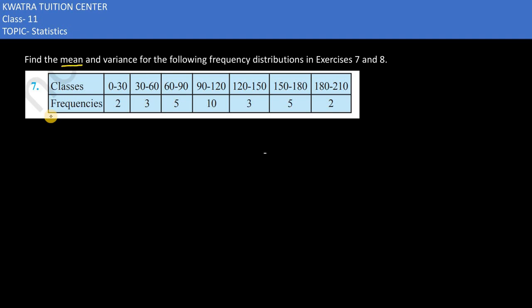Here we need to find the mean and the variance for the following frequency distribution. We have classes and frequencies. First we have to find the midpoint because we need to find the mean. The midpoint of 0 and 30 is 15, midpoint of 30 and 60 is 45, 60 and 90 is 75, 90 and 120 is 105, 120 and 150 is 135, 150 and 180 is 165, and 180 to 210 is 195. We have the frequencies in front.